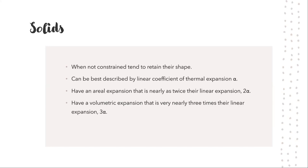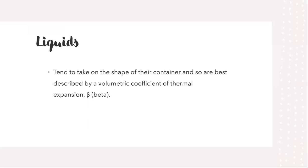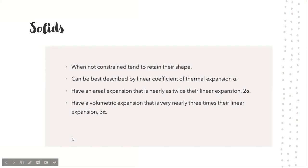Solids have their own shape. For example, a pencil keeps its shape when you write with it. And they tend to keep their shape when they're not constrained. Solids can be best described by linear coefficient of thermal expansion. Have an aerial expansion that is nearly as twice as their linear expansion. Have a volumetric expansion that is very nearly three times their linear expansion. When solids are heated, their atoms vibrate faster about their fixed points.